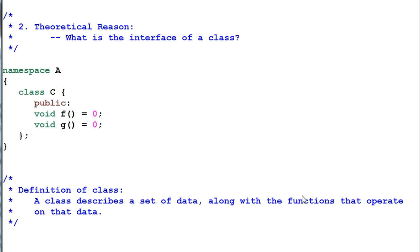Now the theoretical reason. Let's ask the question: What is the interface of a class? We have a namespace A and inside A we have a class C. What is the interface of C?